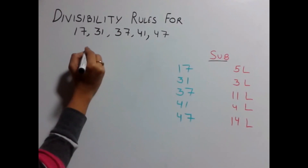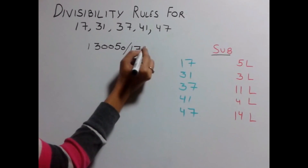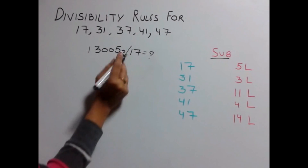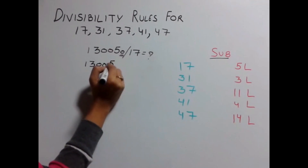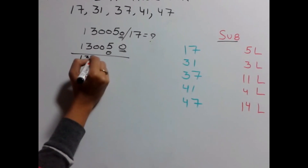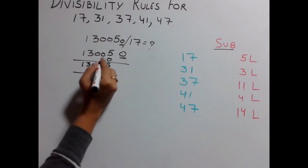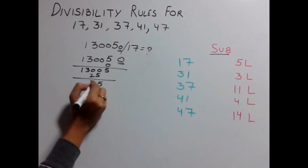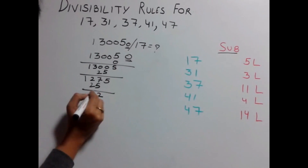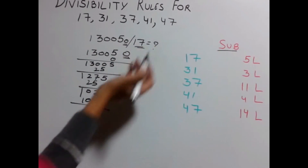Let's look at one more example. Take 132050 and find out whether it is divisible by 17 or not. For 17, multiply the last digit by 5. The last digit is 0, so 0 × 5 = 0. Subtract it, which gives you 13205. Again, last digit is 5: 5 × 5 = 25. Subtract 25 from the remaining number 132: 10 − 5 = 5, 9 − 2 = 7, giving 1275. Again, 5 × 5 = 25. Subtract: 7 − 5 = 2, leaving 12. Then 2 × 5 = 10. Subtract, which gives 0. So this number is divisible by 17.